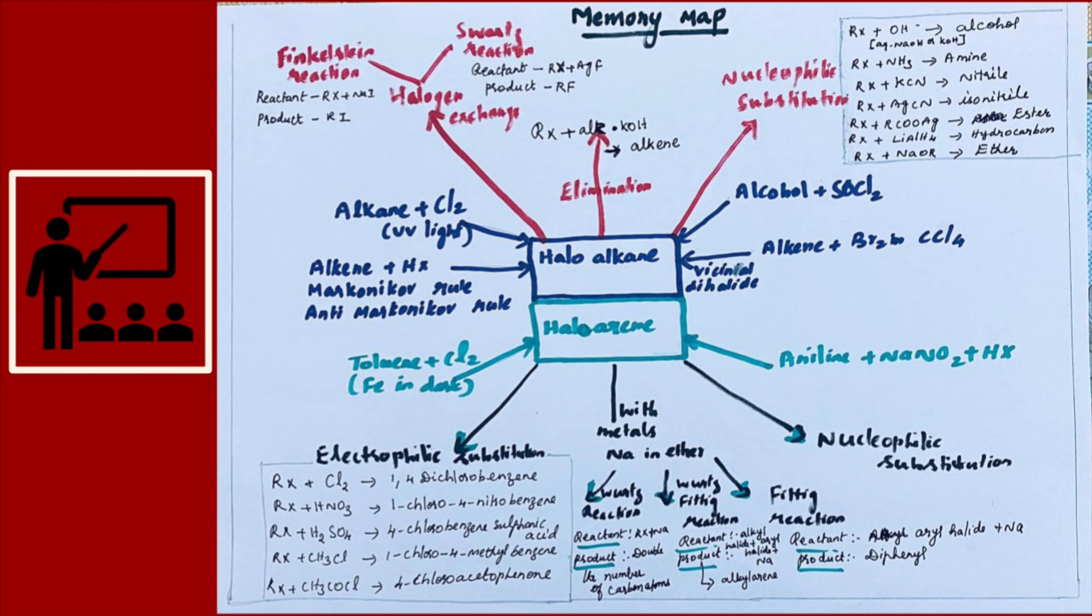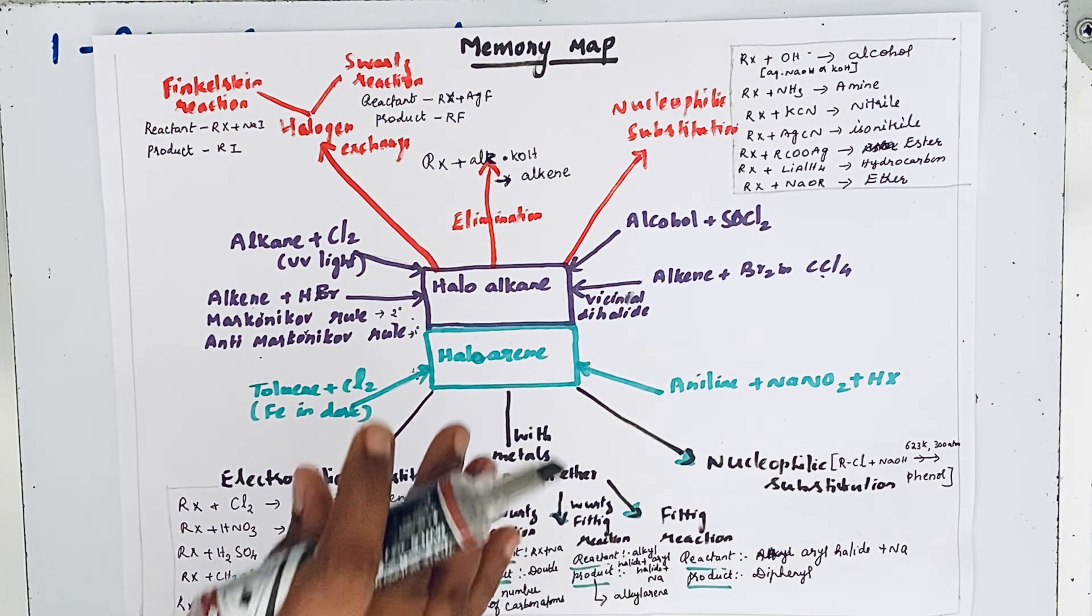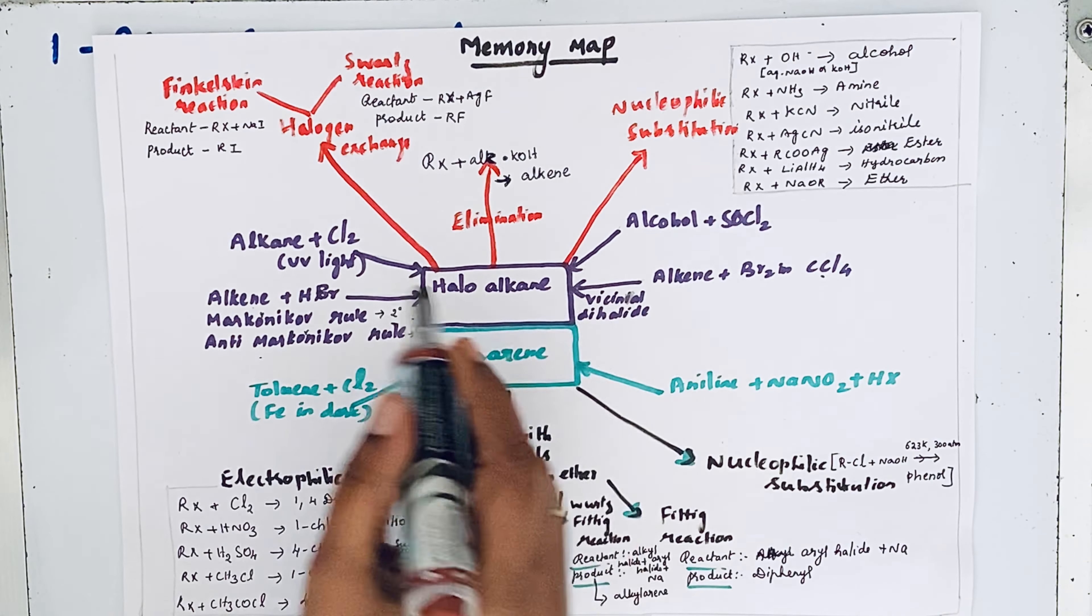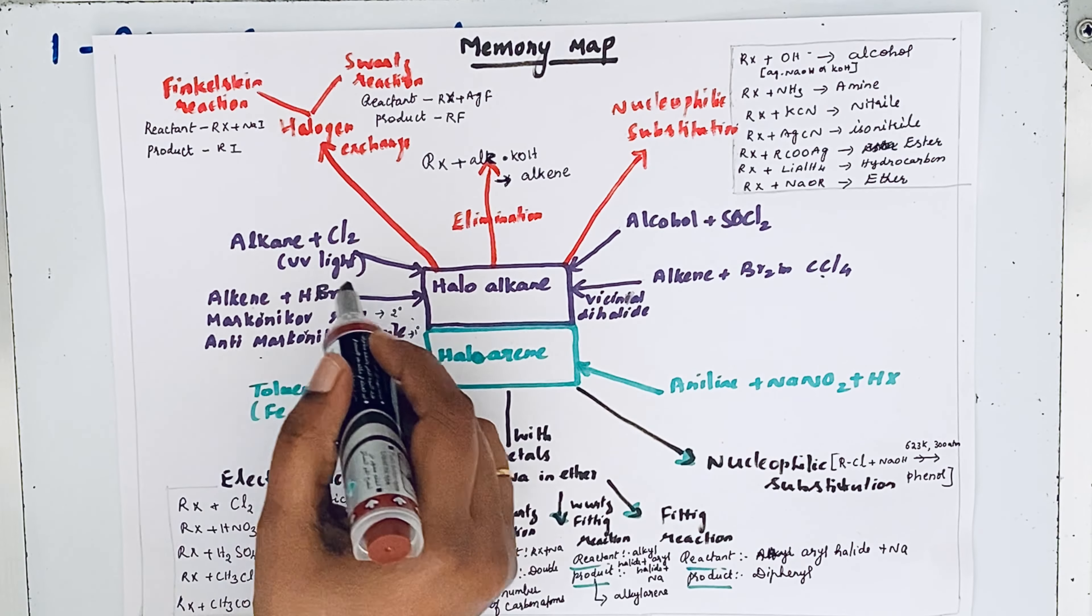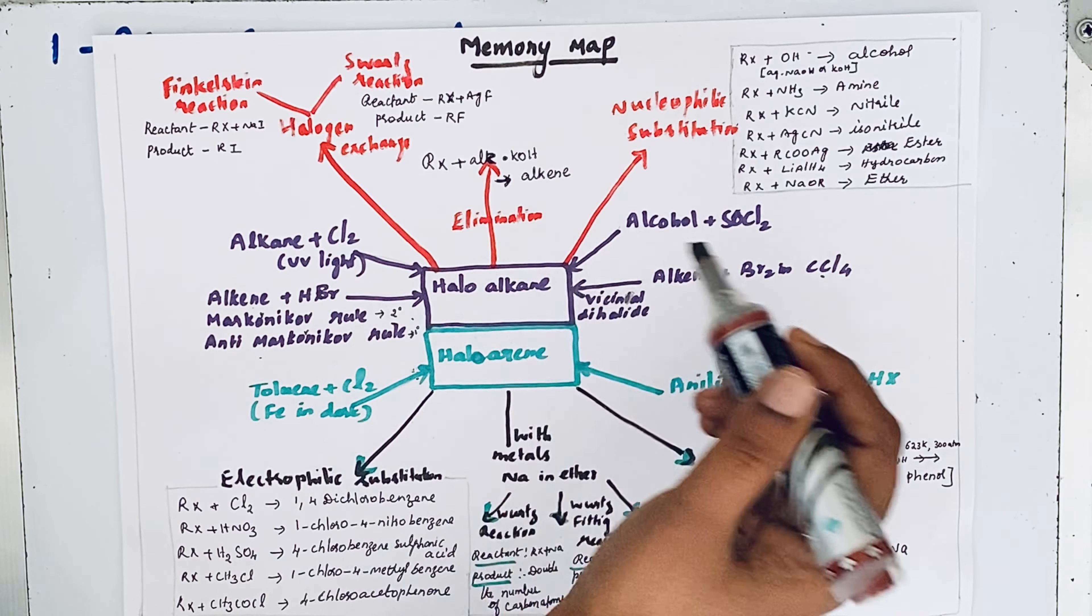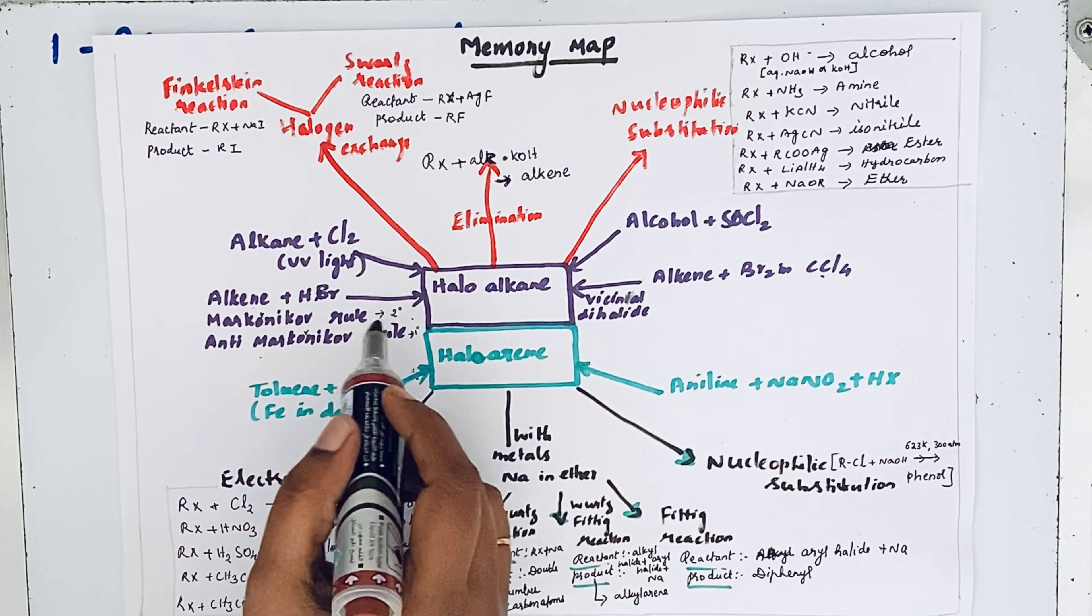What we need to bring this conversion is this memory map. You can see in the memory map two parts are there: one is about haloalkane, another one is haloalkene. Our question does not contain any cyclic compounds, so we are going to concentrate only on haloalkane. The purple color shows preparation of haloalkane, then the red color marker shows reactions involving haloalkane.